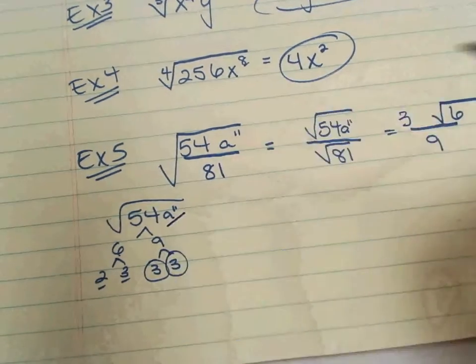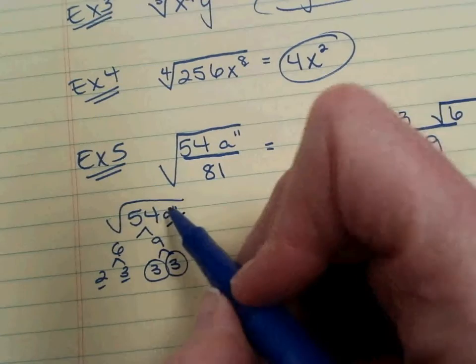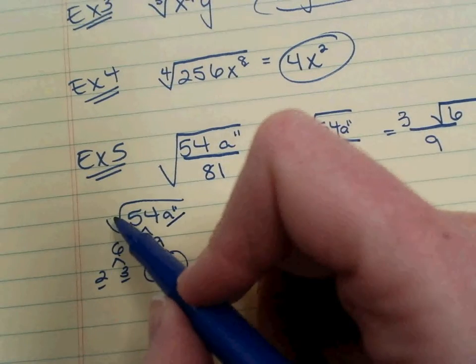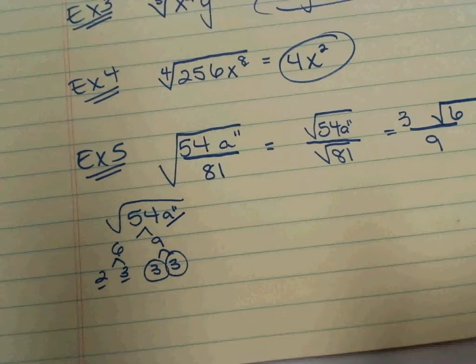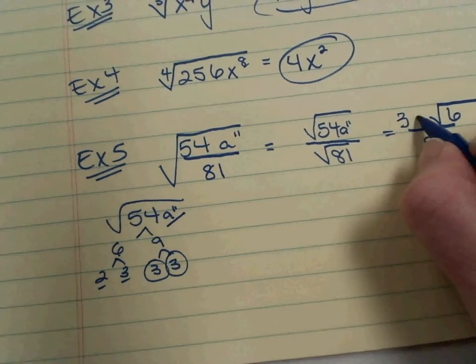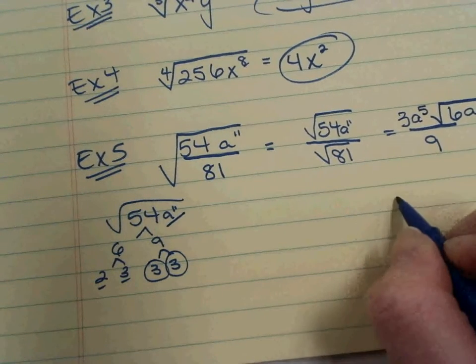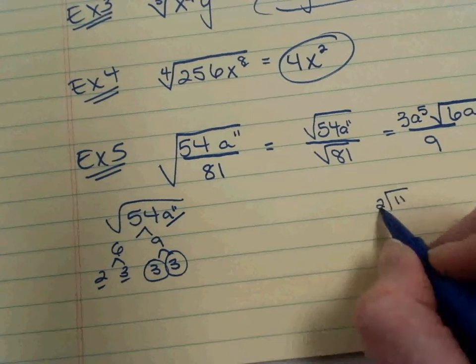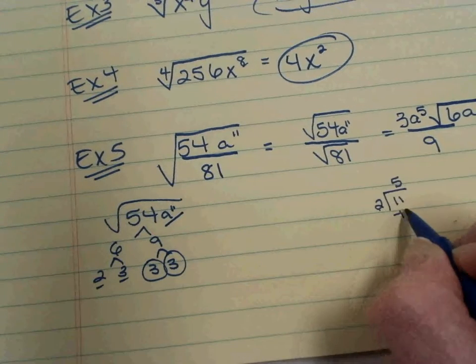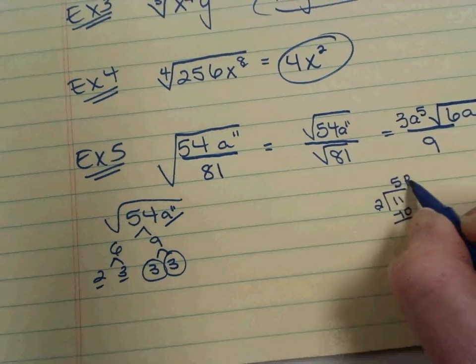And then dealing with the a to the 11th. We're doing 11 divided by my index of 2. So 11 divided by 2. 2 goes into 11 5 times. With 1 left over. If you think about 11 divided by 2. 2 goes in 5 times. With 1 left over.